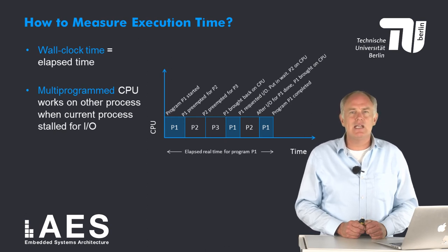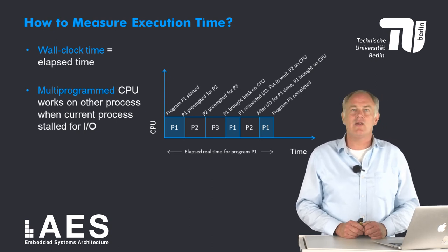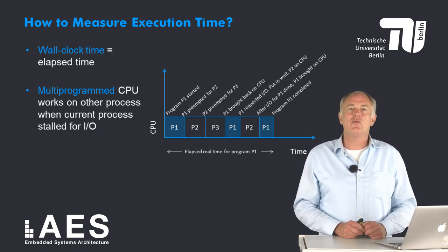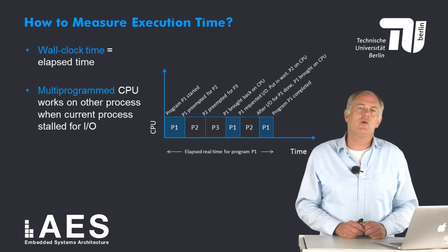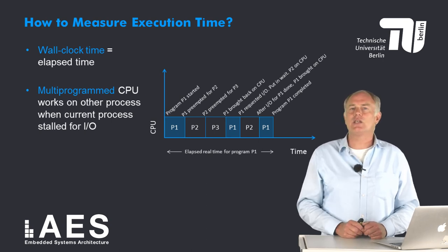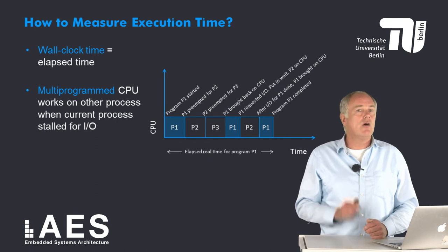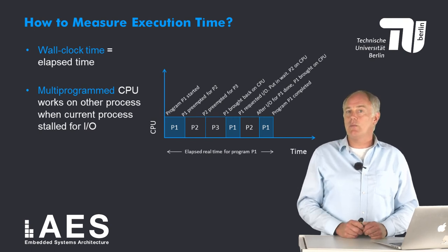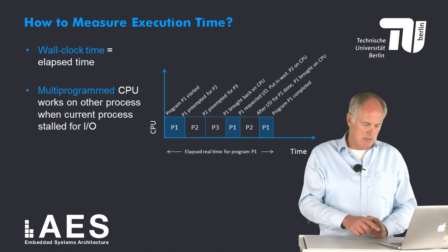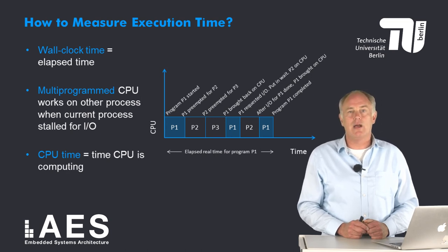Multiprogramming is illustrated in this figure. The blue boxes denote time when process P1 is executing, while the white boxes represent time when other processes P2 and P3 are executing. Multiprogramming does not improve the execution time of the current process, but it does improve throughput — the rate at which processes are executed. For that reason, when we talk about the time a program takes, we mean the CPU time: the time the CPU is computing, not the time waiting for IO or running other programs.